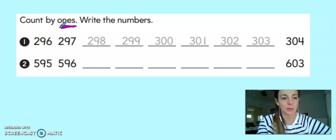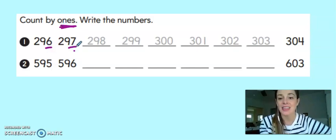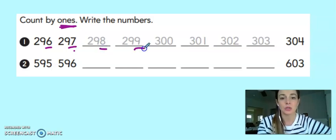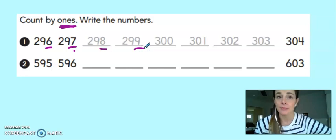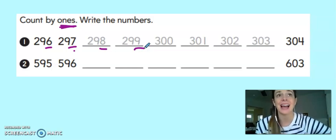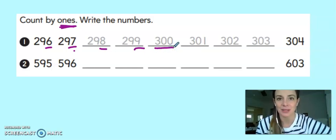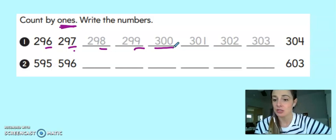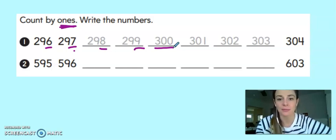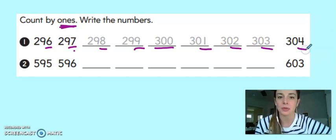Let's look at example number one. First, I have 296, 297, and then they kept going for us. 298, 299, and I know if I have 99, then I'm going to jump to the next new 100, which is 300. Then I have some extra spaces, so I'm going to keep counting. 301, 302, 303, 304.